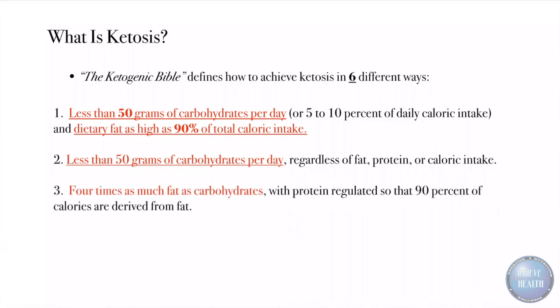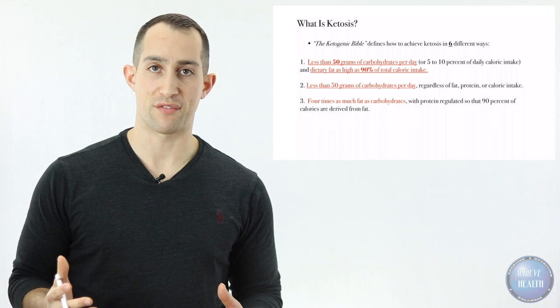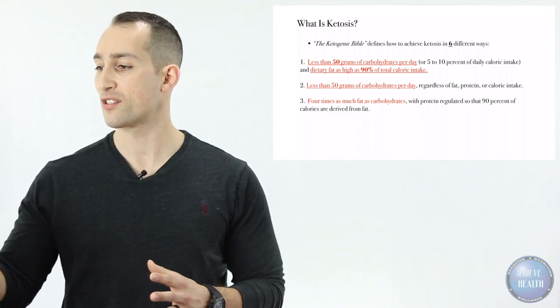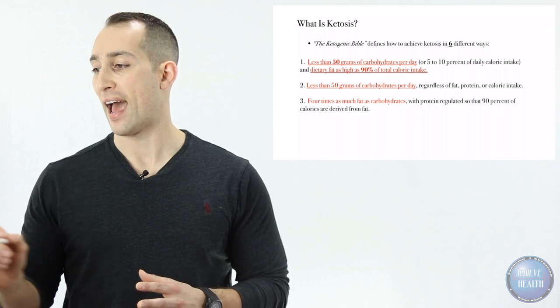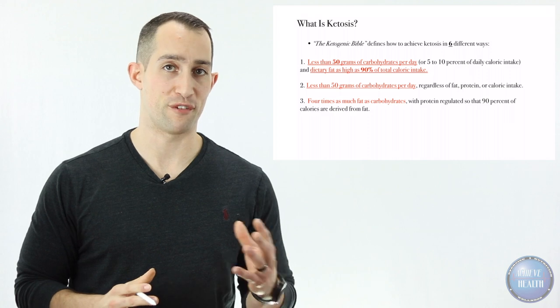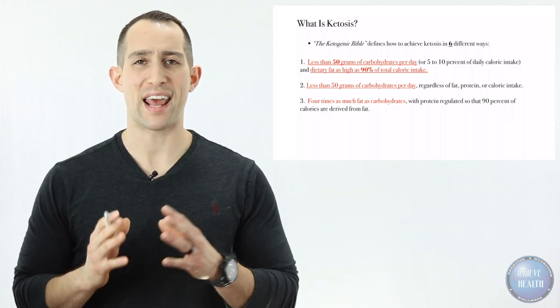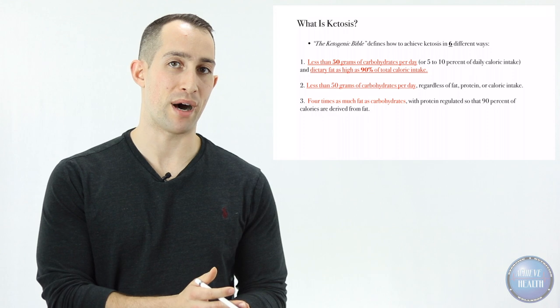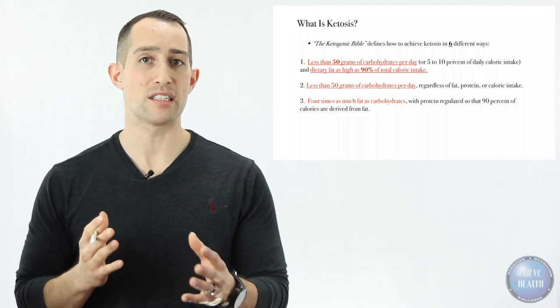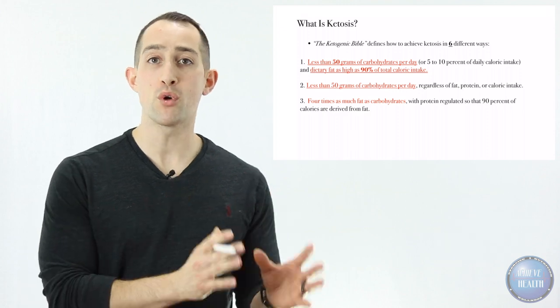Number three: four times as much fat as carbohydrates with protein regulated so that 90 percent of calories are derived from fat. This is a great definition that gives you a perspective on ketosis. Four times as much fat as carbohydrates is a fantastic ratio, though not everybody needs this ratio to put their body into ketosis. This is considered a very high ratio and typically this is a more therapeutic approach.